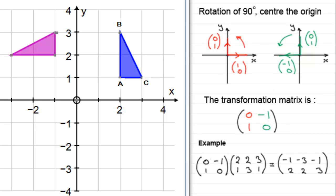I'd encourage you to draw any shape on graph paper, pre-multiply it by this matrix, get your image matrix, plot the points, and check that it gives you a rotation of 90 degrees about the origin. In other tutorials in this series we'll look at other types of transformations, but they're all built up by considering the movements of the two unit vectors (1, 0) and (0, 1).